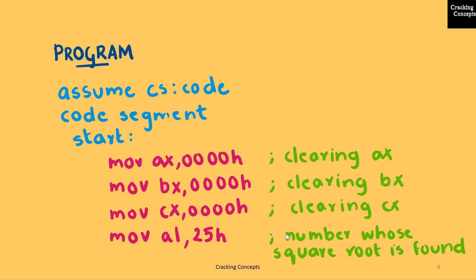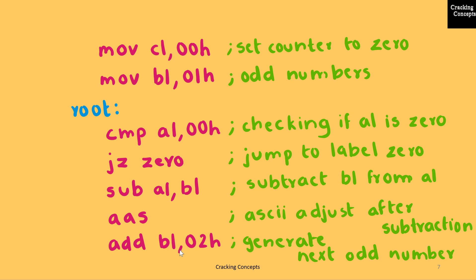In order to avoid an incorrect output, it is safe to clear the entire 16-bit registers. After that, the number whose square root is to be found, that is 25 in my case, is stored in the register AL. Then we will set the counter value to 0, which is CL, and the register that is generating the odd numbers, BL, is set to 1.